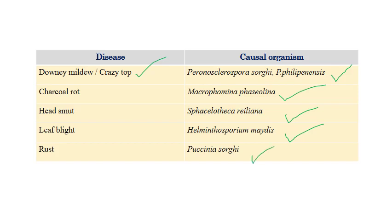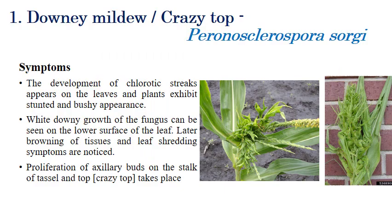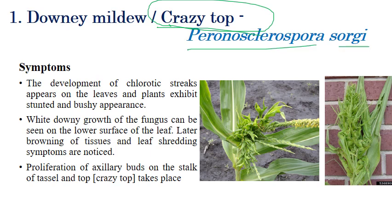We will now see each disease in detail one by one. The first one is downy mildew or crazy top. Downy mildew of maize is otherwise called as crazy top of maize, which is caused by Peronosclerospora sorghi.